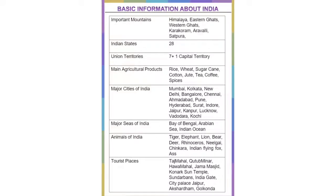The major seas of India are the Bay of Bengal, Arabian Sea, and Indian Ocean. The animals of India include Tiger, Elephant, Lion, Bear, Deer, Neelgai, Indian Flying Fox, etc.